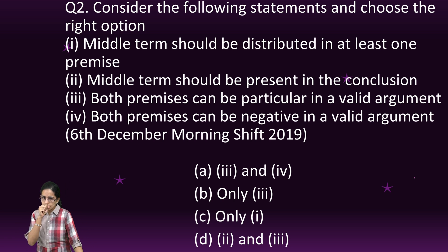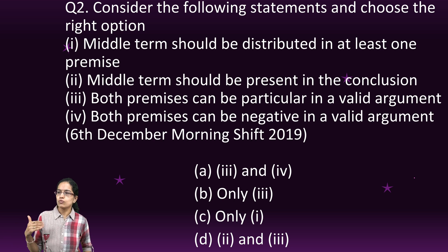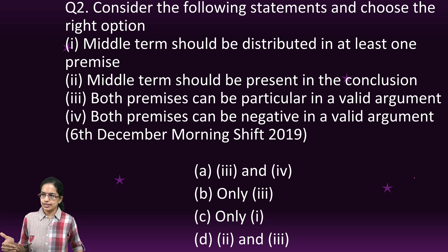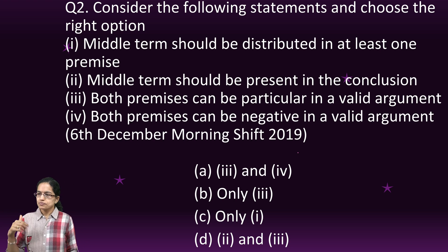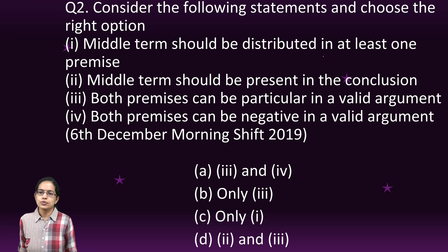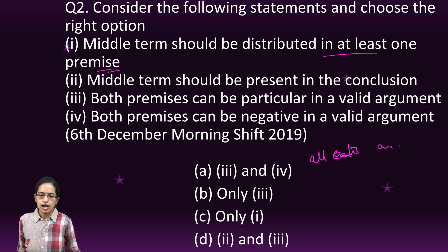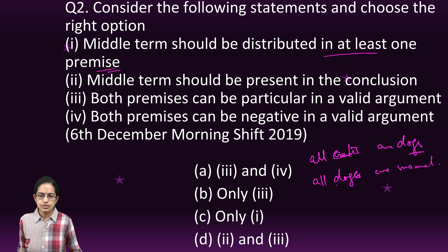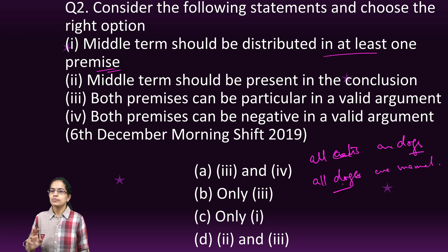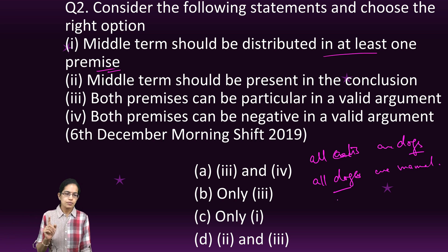The next question is about understanding what is a middle term. The right statement is: the middle term should be distributed in at least one of the premises. So when I say 'all cats are dogs' and 'all dogs are mammals,' the middle term is 'dogs' and it is distributed in at least one of the premises.